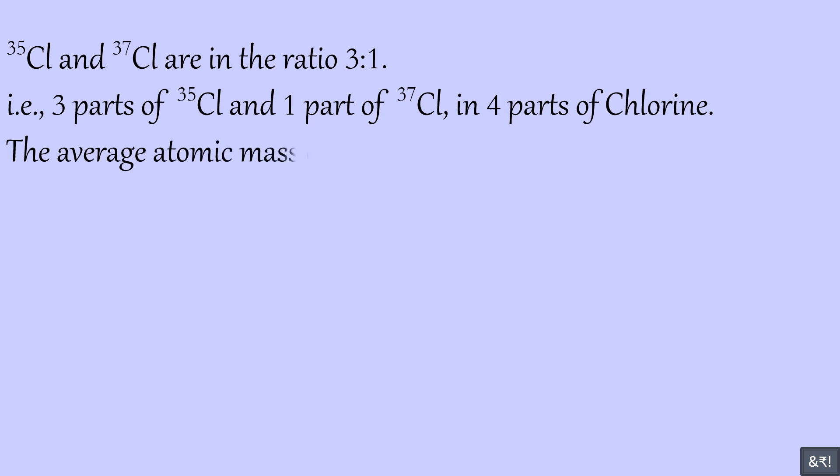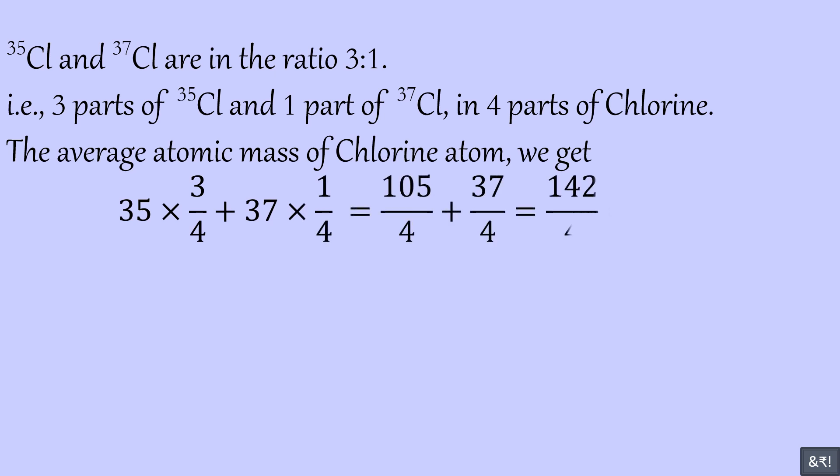The average atomic mass of chlorine atom, we get, 35 times 3 quarters plus 37 times 1 quarter equals 105 fourths plus 37 fourths equals 142 fourths equals 35.5U.